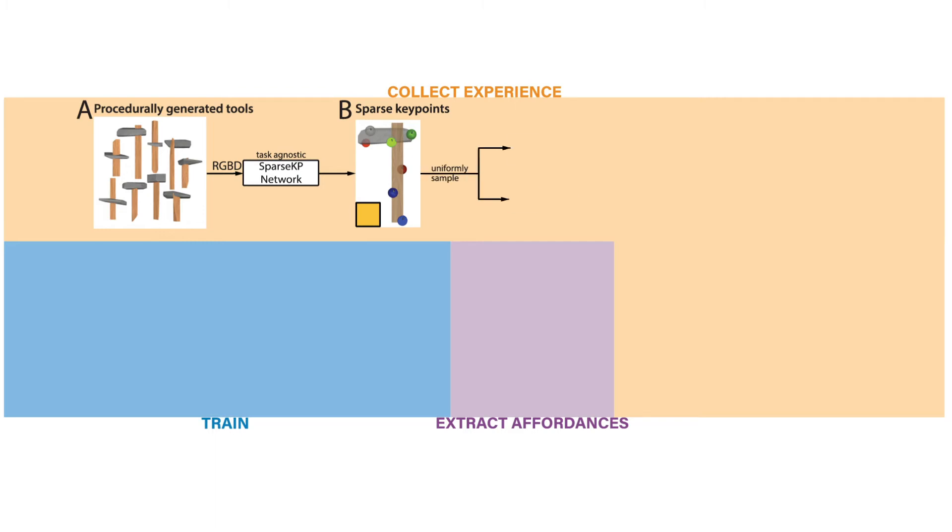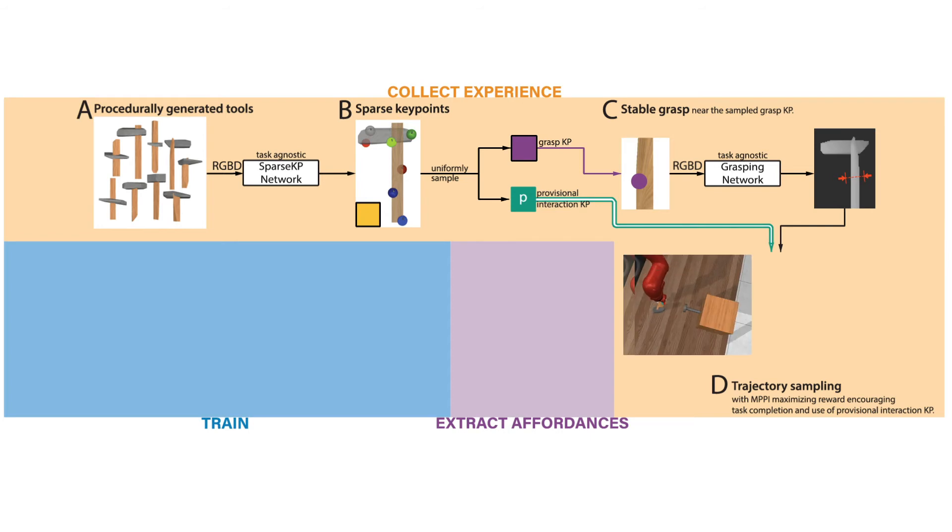A grasp key point and provisional interaction key point are uniformly sampled from the sparse ones. We take a crop of the RGBD observation around the grasp key point and pass it to a grasping network to infer a nearby stable grasp. This grasp is executed before we generate the rest of the trajectory with MPPI.